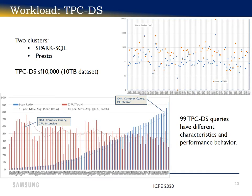Let's now switch gears and talk about the workload we use, TPC-DS. We experiment with two engines, Spark SQL and Presto, both in-memory databases. We use two 8-node clusters and scale factor 10,000, which translates to a 10TB dataset.